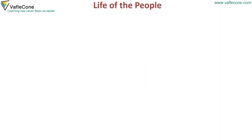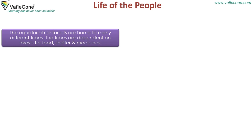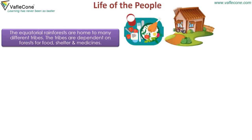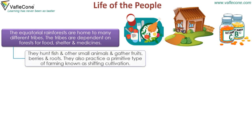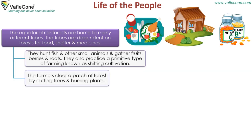Life of the people: The equatorial rainforests are home to many different tribes. The tribes are dependent on the forest for food, shelter and medicine. They hunt fish and other small animals and gather fruits, berries and roots. They also practice a primitive type of farming known as shifting cultivation. The farmers clear a patch of forest by cutting trees and burning plants.